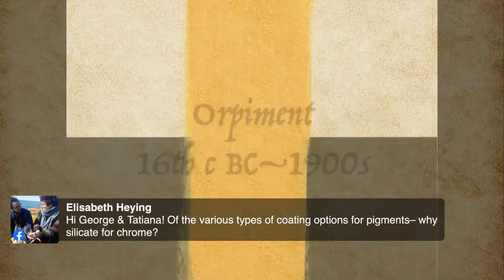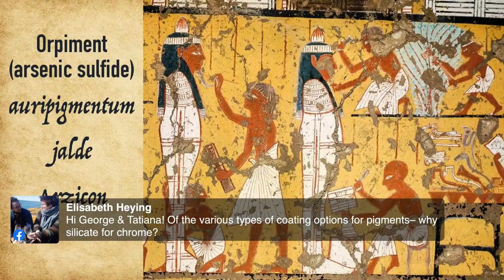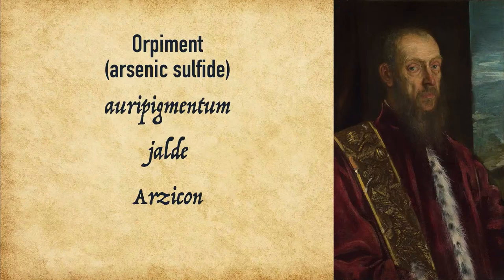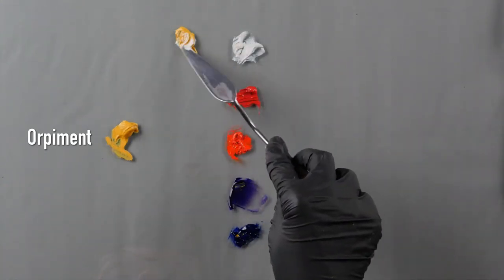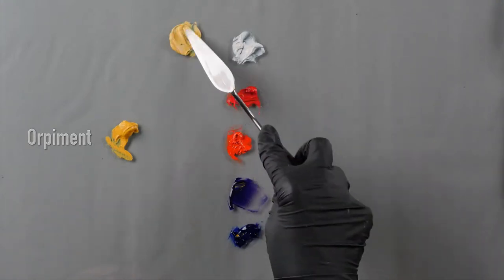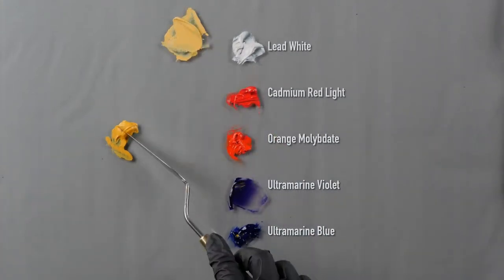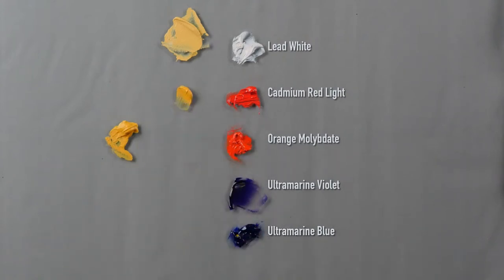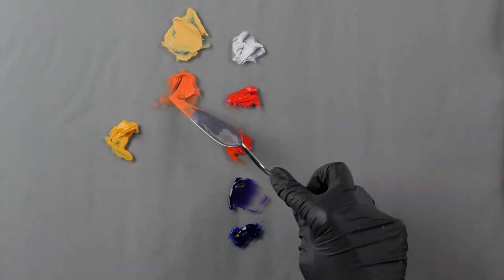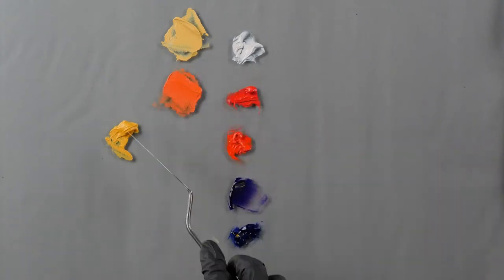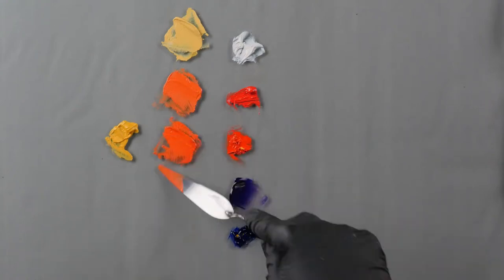Now we get into the fun color. Elizabeth, silicate is used because it's inert, so it protects the color — this is also the case for titanium dioxide; all titaniums today are coated in a silicate or perhaps a zirconium. This is one of the most interesting colors among all: this is Orpiment. Nobody in the world is attempting to produce this. We are here, crazy enough to do it because George absolutely loves all the historical colors. Orpiment is arsenic sulfide — it's quite toxic. Please be careful. Don't ingest it.